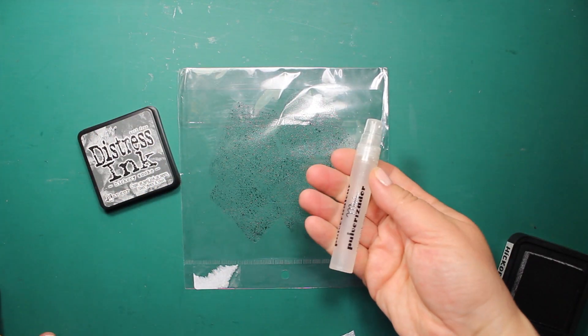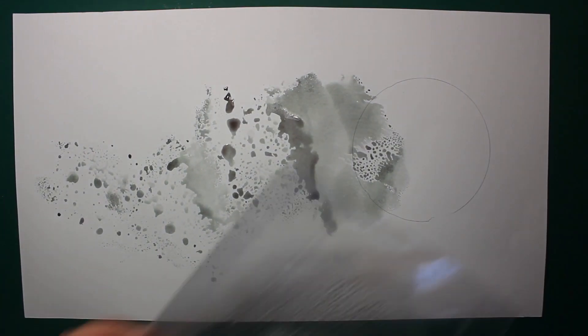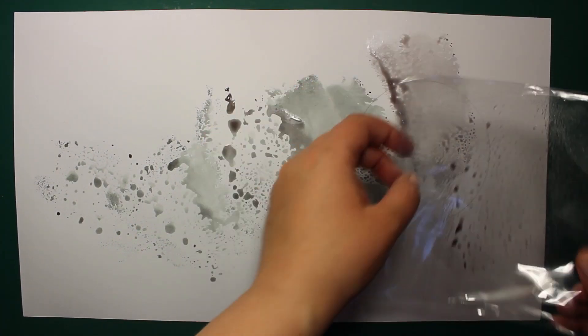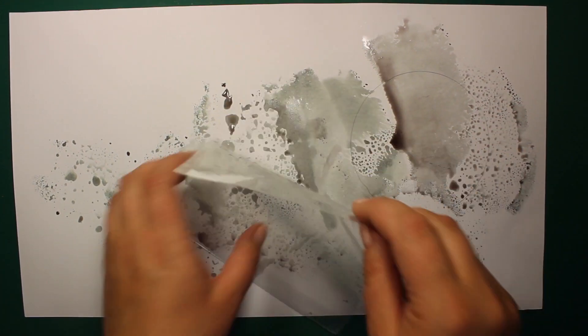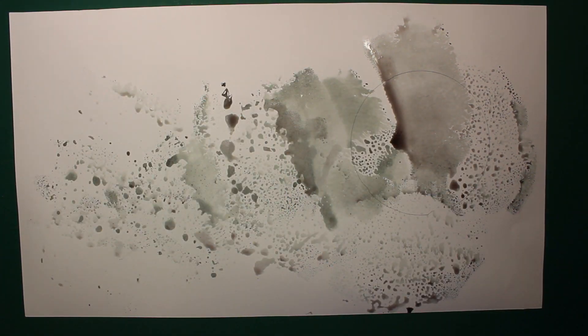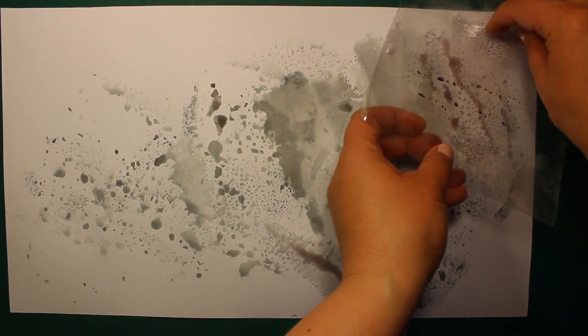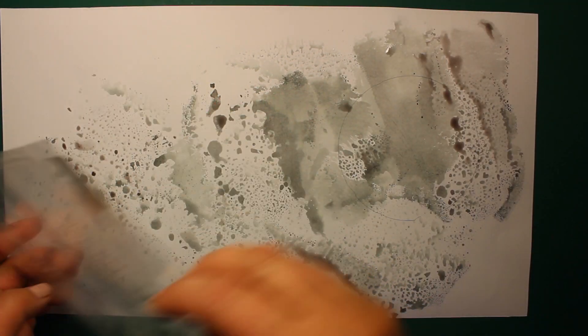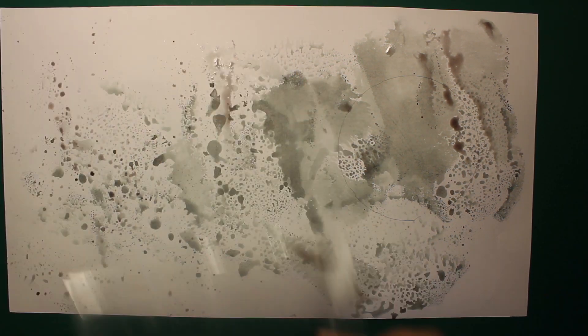Now I am pressing Hickory Smoke Distress Ink Pad onto the plastic bag, then I'm spritzing it with water and I'm transferring the ink onto the project using this plastic bag as a stamp. This is the quick and simple way to create splatter effect even on large areas like the one I have here. I am repeating this process to add more splatters and then I'll be using the heat tool to speed up the drying.